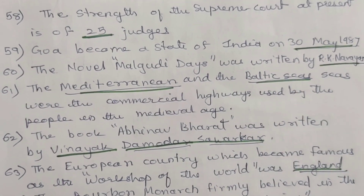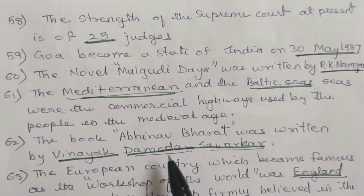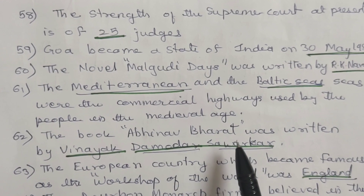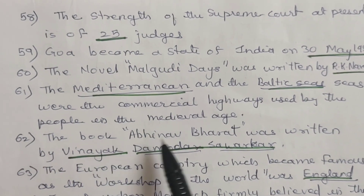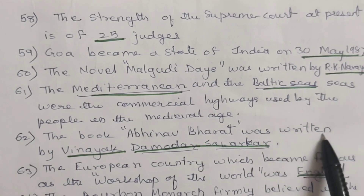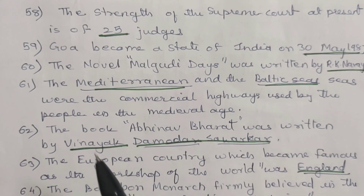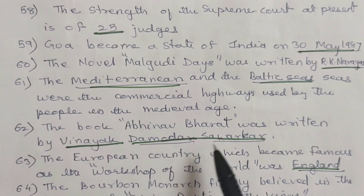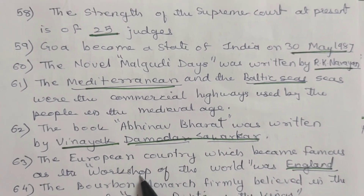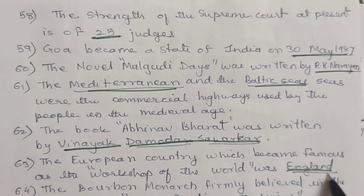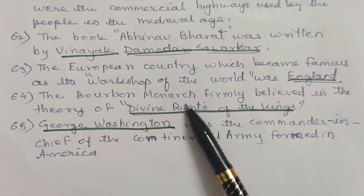61. The Mediterranean and Baltic Seas were the commercial highways used by people in the medieval ages. 62. The book Abhinav Bharat was written by Vinayak Damodar Savarkar. 63. The European country which became famous as the workshop of the world was England.